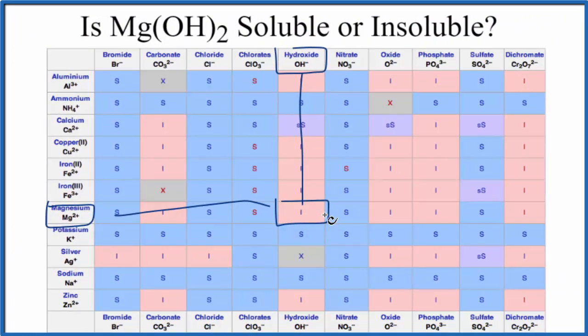There is one more way that we could test the solubility of magnesium hydroxide here. We could just get some, put it in water, and see what happens. Based on the chart here, based on the solubility rules, we would find that it would be insoluble.